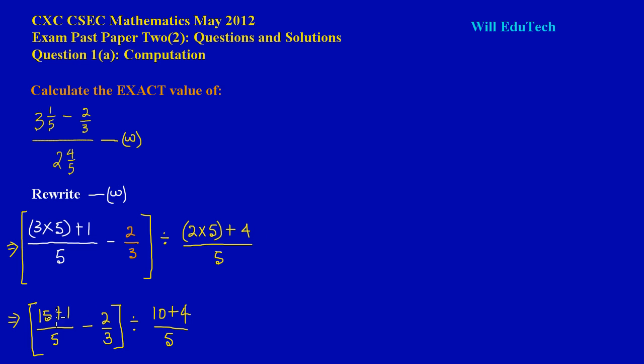Now my friends, let's just take this up top up here so that we have a little bit more space to work with. So this implies that 15 plus one, that will give me a 16 upon five. So let's just put that there, 16 upon five. And that is being subtracted by 2 and 2 upon 3, 2/3.